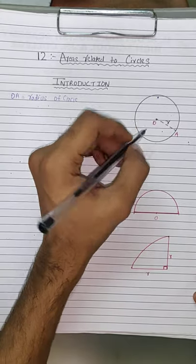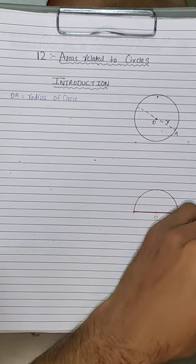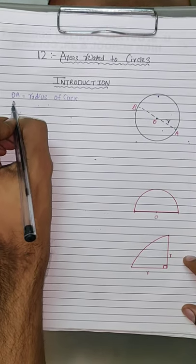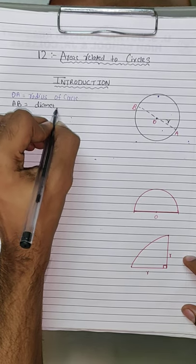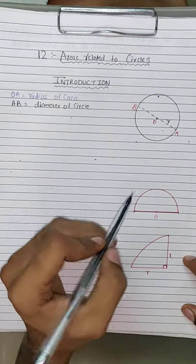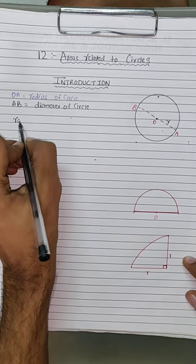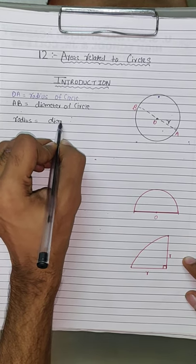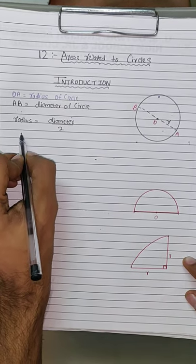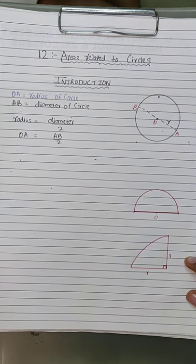Next, I have extended this line — let's say this point is B. So the AB part: AB is nothing but the diameter of the circle. The relation between radius and diameter is that radius is always half of diameter. So OE is nothing but AB by 2.